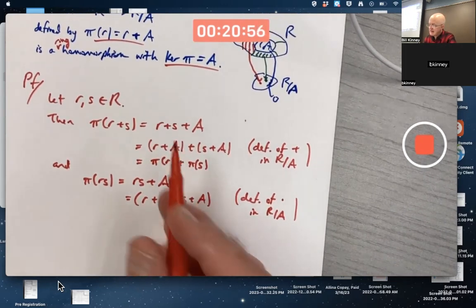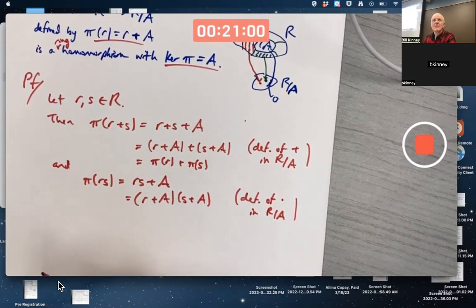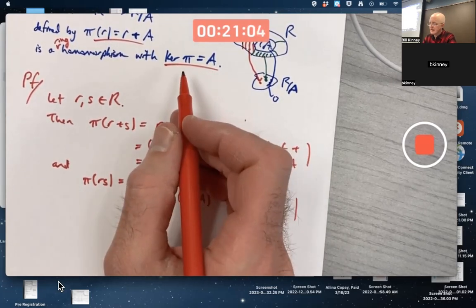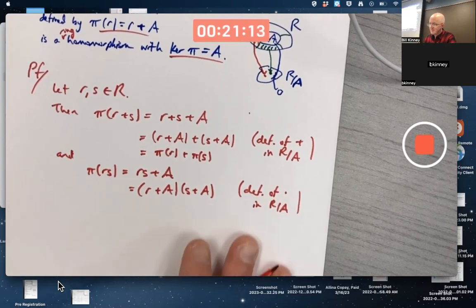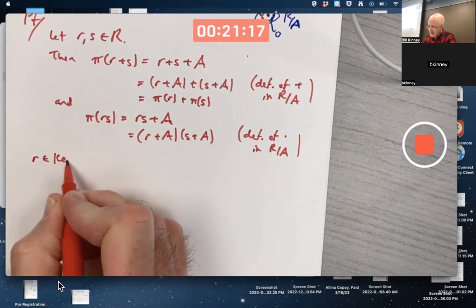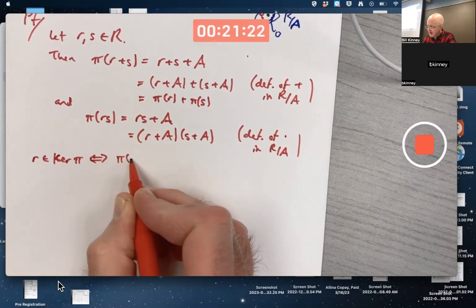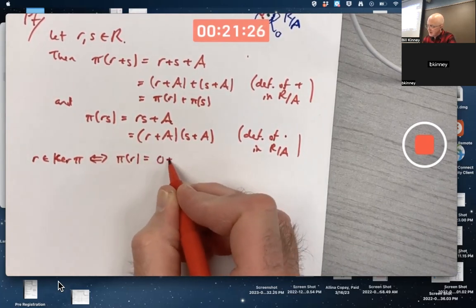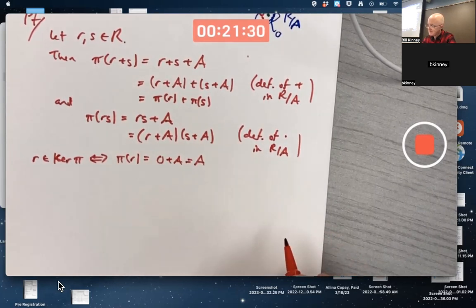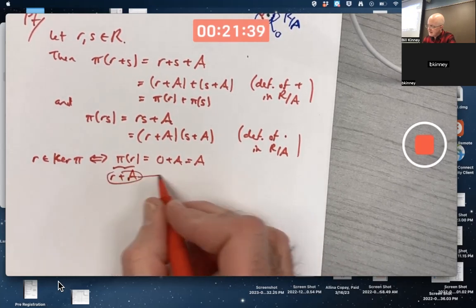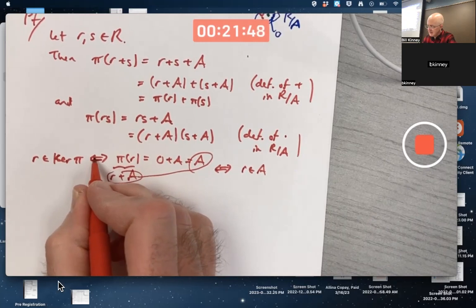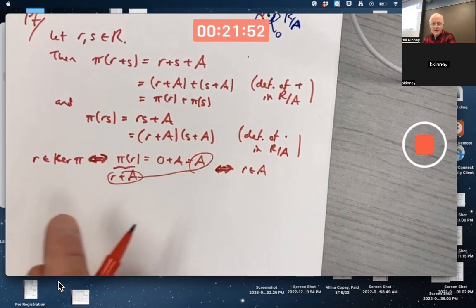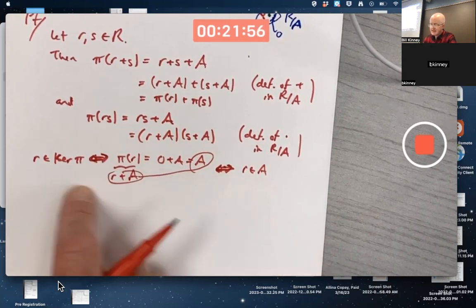All that's left is to verify that the kernel of pi equals A. Technically we need to show two inclusions here. If an element's in the kernel, then it's also in A and vice versa. We could effectively do that at once by writing double implications here. R being in the kernel of pi is equivalent to saying pi of R equals 0 plus A, the zero element. But pi of R equals R plus A. And this equality by properties of cosets is equivalent to saying R is in A. Done.